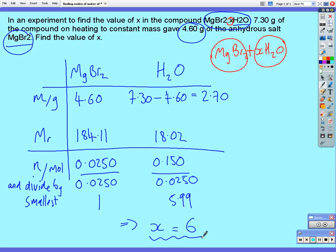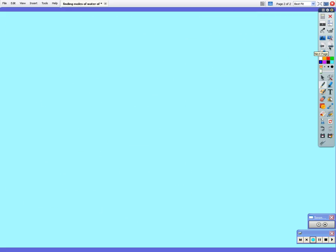Now, we can do that question in a slightly different way, and sometimes you might be asked to do it by finding out the relative molecular mass, or the formula mass of the hydrated salt. Now, remember, that magnesium bromide·xH2O undergoes this change when heated. So, we can write that balanced chemical equation.